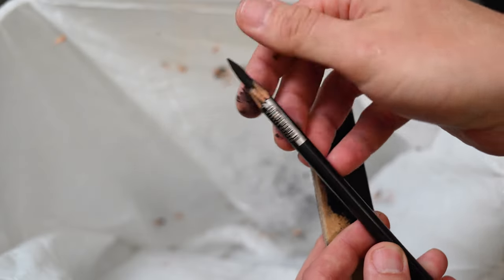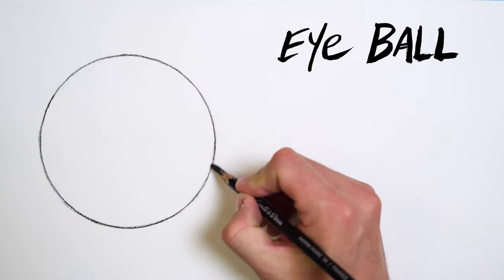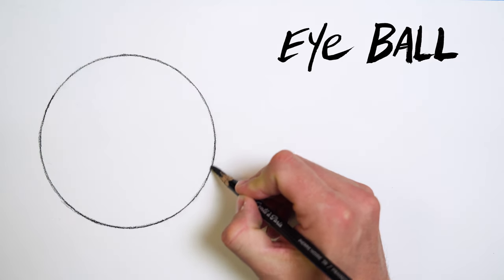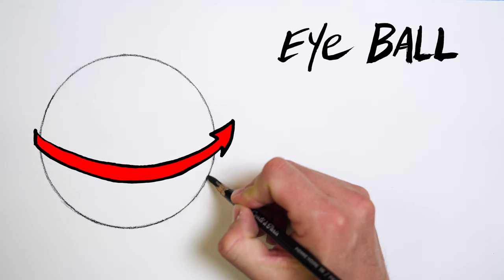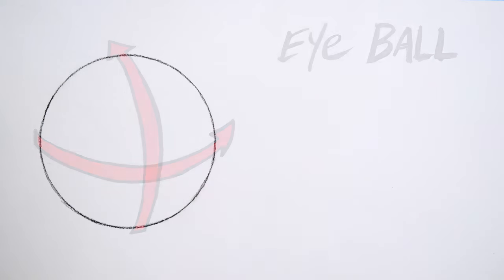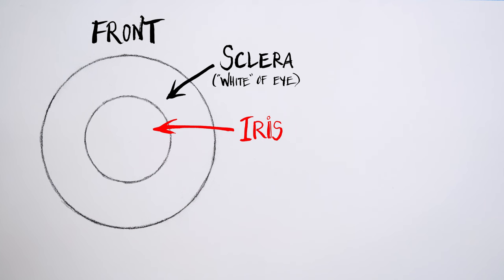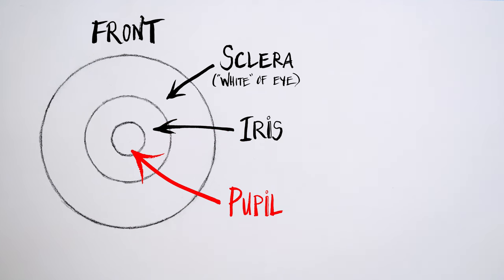By starting with the basics. The eye is a sphere, or a ball, with both volume and dimension. Composing the eyeball is the sclera, or the white of the eye, the iris, or the colored portion of the eye, and the pupil, or the aperture to our camera.